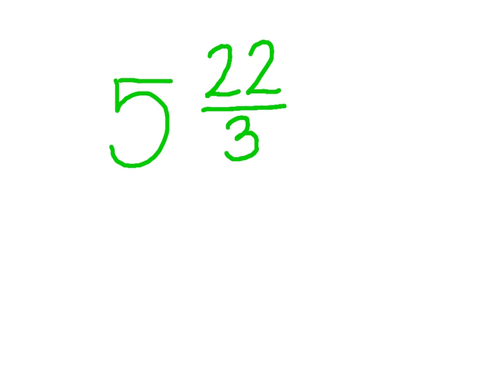Sometimes you're given a mixed number that also has an improper fraction. Remember, an improper fraction is a number where the numerator is higher than the denominator. So 5 and 22 thirds has an improper fraction, even though it's a mixed number. I need to make my improper fraction into a mixed number, and then add the whole number 5 to that.